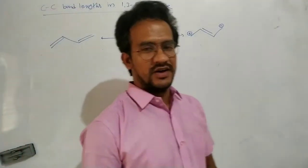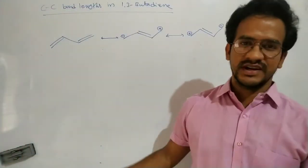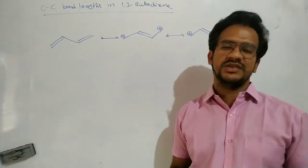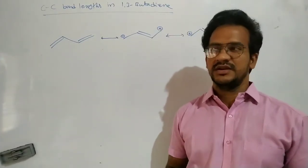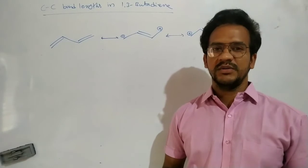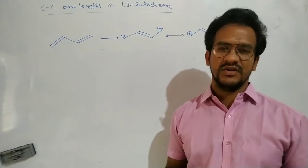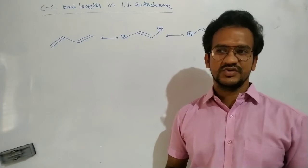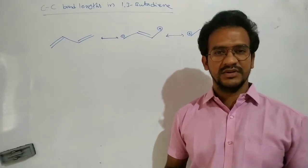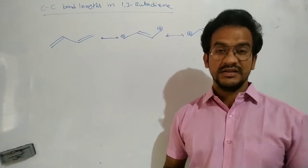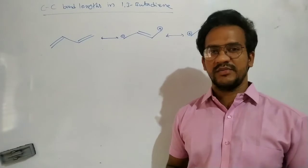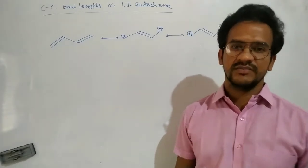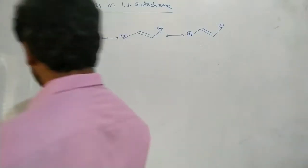Hello students. In this video, let us discuss the carbon-carbon bond length in 1,3-butadiene. We know that the carbon-carbon bond length in benzene is equal, and it has just two resonant structures. These two resonant structures are equally stable, and their contribution to the resonance hybrid — that means to the real structure — is equal.